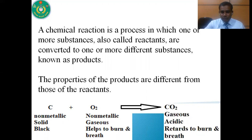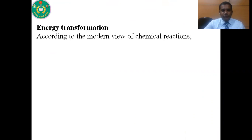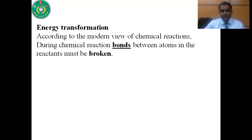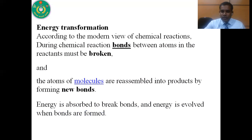A chemical reaction is the process in which one or more substances react with each other and form new compounds of new properties. Now, how does energy transformation occur in a reaction? According to the modern view of chemical reaction, during a chemical reaction, bonds between atoms in the reactants must be broken, and the atoms of molecules are reassembled into products by forming new bonds.